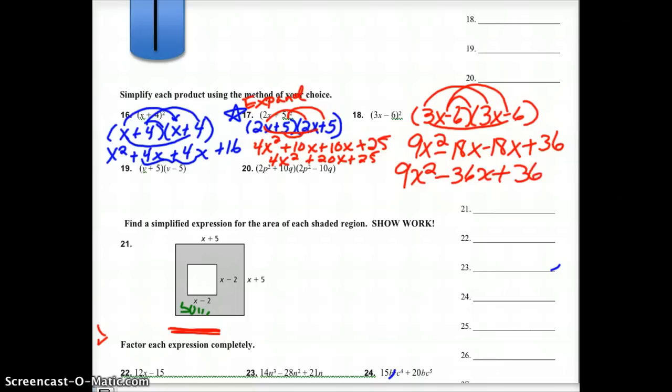And number 19. They've already got it written out here. So firsts, outside minus 5v, inside minus 5v. And you might have recognized that those are going to cancel without foiling. But I will foil it out anyway for you. So we end up with v squared. These cancel out. Minus 25. And that one's done. Number 20. My firsts. 2 times 2 is 4. p squared times p squared is p to the 4th. And then you'll notice again, my outside and my inside are going to cancel on this one. So I'm just going to do the last. 10 times 10 is 100. q times q is q squared. And we're done with number 20.